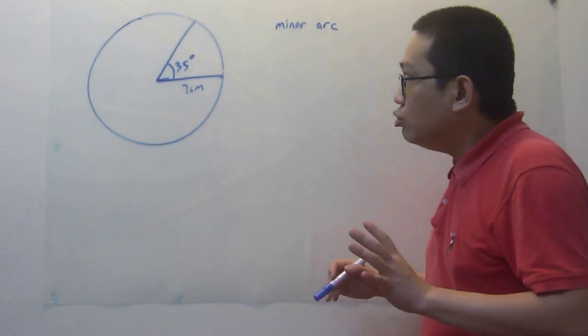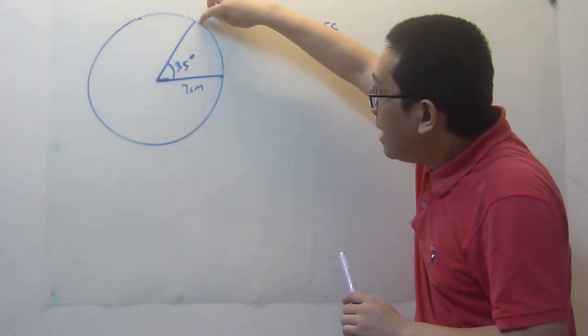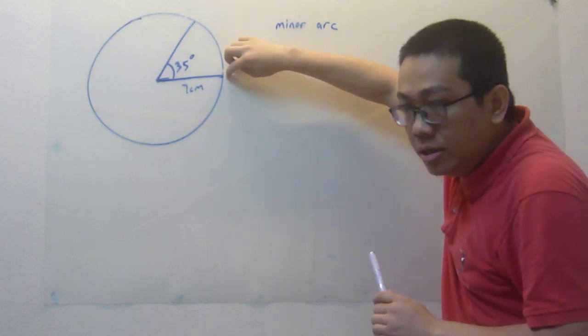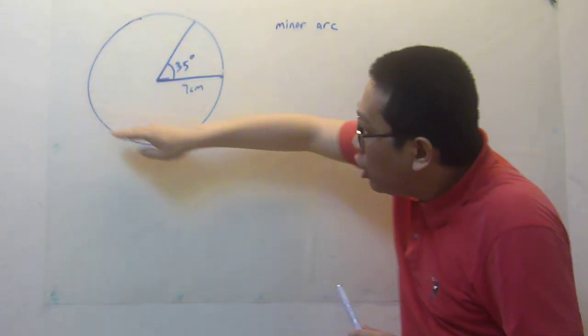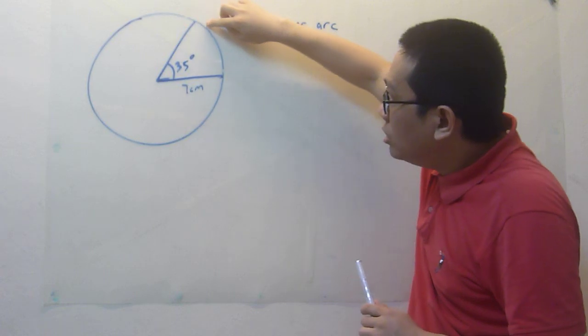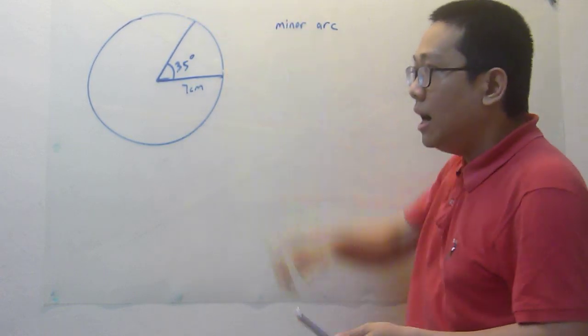Sometimes the questions will request you to find just the minor arc of the circle. So they are not asking for the whole circumference, but they just want to know the minor arc, the length of the minor arc.